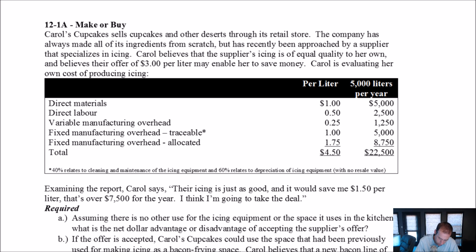Carol's evaluating her own costs. And she shows that, hey, look, it costs me $4.50 if I want to make it. They're offering it to me for $3. So that's a savings of $1.50 per liter. And that's what she says. Examining the report, Carol says, their icing is just as good and it would save me $1.50 a liter. And if she's making 5,000 liters a year, that's $7,500. That's like enough to buy a pretty nice used car. Like that's real money. So of course you'd consider this if you were Carol. And that's exactly what she's going to do.